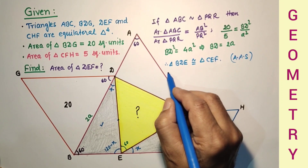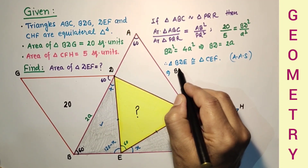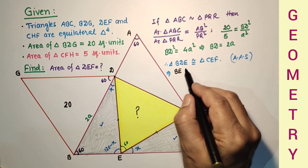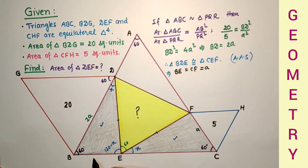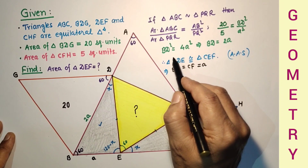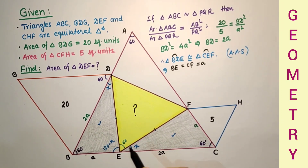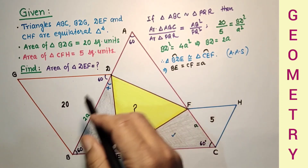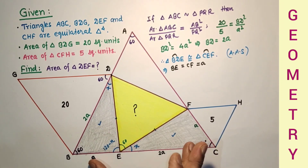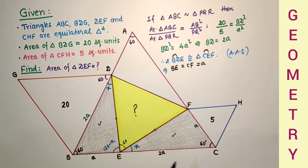By AAS congruency, corresponding sides are equal. Therefore BE = CF = A, and BD = CE = 2A. Similarly, all three triangles are congruent to each other, since the full side is 3A with parts A and 2A, confirming the configuration.